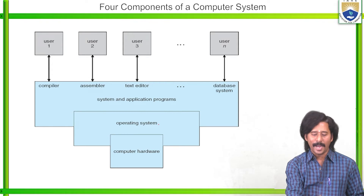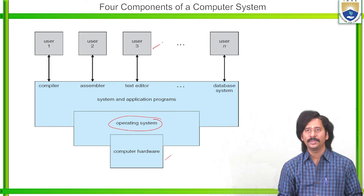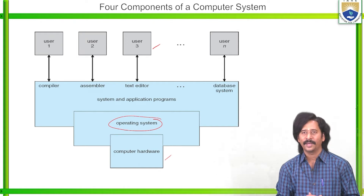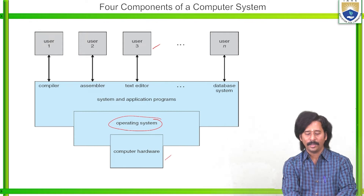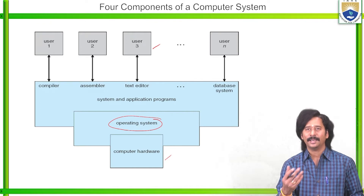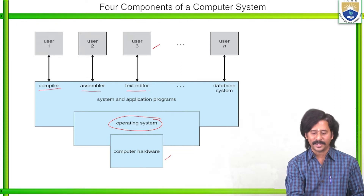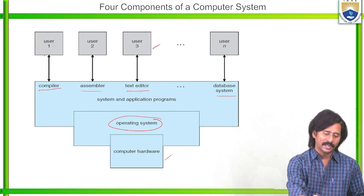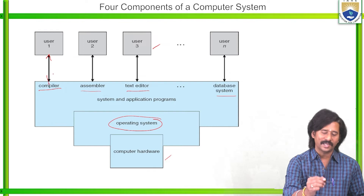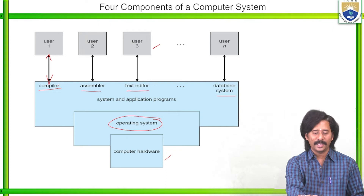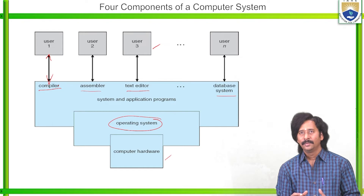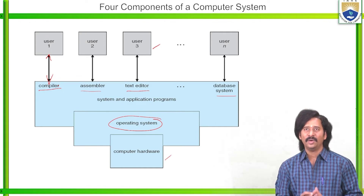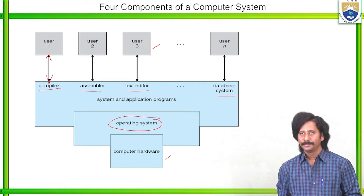The operating system acts as an interface between computer hardware and users. The operating system is built upon hardware, and system and application programs — like compilers, assemblers, text editors, and database systems — are built upon it. Each user interacts with system and application programs in a bi-directional way: user one interacts with the compiler, user two with the assembler, and so on. This is the pictorial representation of the four components of a computer system.